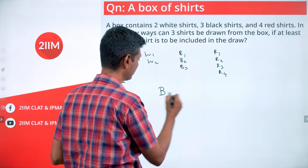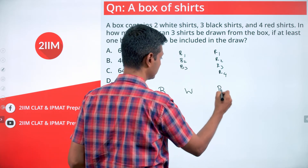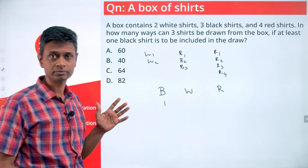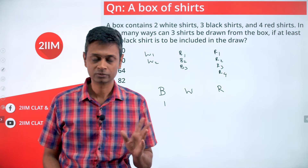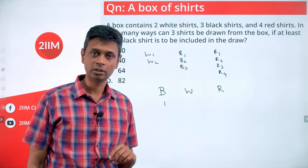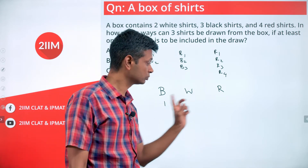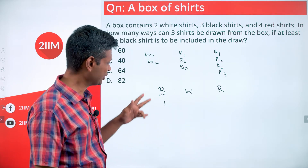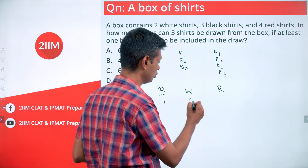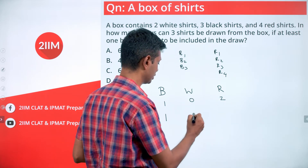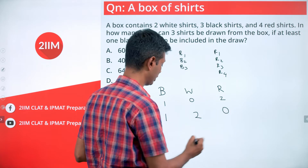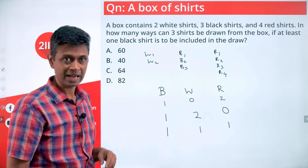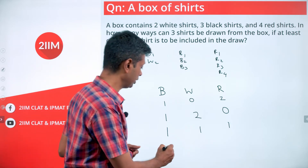So I'm going to start with black shirts. We could have one black shirt, two, or three — we cannot have zero. With one black shirt, the other two come from white and red. So with one black shirt selected, we could have: zero white and two red, one black with two white and zero red, or one black with one white and one red. Then we move on to two black shirts.